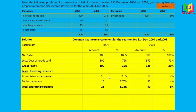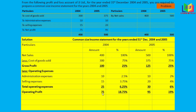Total operating expenses: 10 plus 15 equals 25 for 2004, and 25 divided by 400 gives 6.25%. For 2005, total is 30, and 30 divided by 500 gives 6%. Operating profit: 100 minus 25 equals 75 for 2004 — 75 divided by 400 gives 18.75%. For 2005: 125 minus 30 equals 95, and 95 divided by 500 gives 19%.